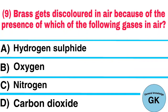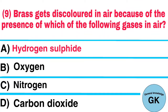Question number 9. Brass gets discolored in air because of the presence of which of the following gases in air? A. Hydrogen sulfide, B. Oxygen, C. Nitrogen, D. Carbon dioxide. Answer: Hydrogen sulfide.